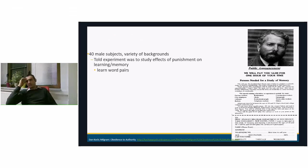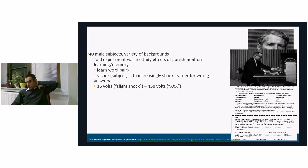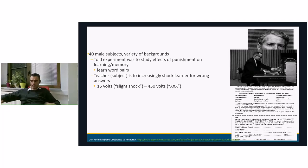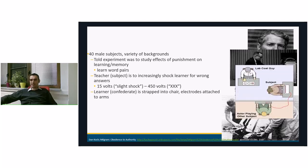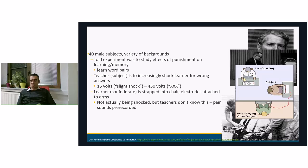He designed an experiment to study the effects of punishment on learning and memory. The task was for the subject of the experiment to learn word pairs. The teacher would punish the learner with electrical shock for wrong answers, going from 15 volts — a slight shock — up to 450 volts — extreme shock. The learner was actually a confederate of the experimenter, placed in a chair with electrodes attached to the arms, but was not actually being shocked. The teachers did not know this.